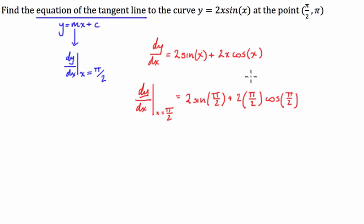So hopefully you guys are aware of your exact values of trigonometric functions. We know that the sine of pi over 2 is equal to 1, and the cosine of pi over 2 is equal to 0. So therefore this is going to be equal to 2 times 1 plus 2 times pi over 2, which is just pi, times the cosine of pi over 2, which is 0. So this is equal to 2.